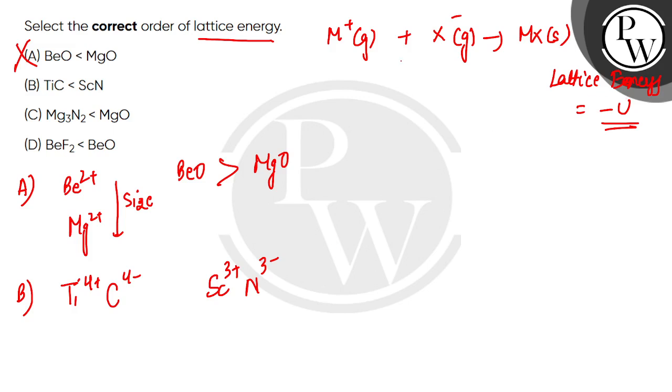The lattice energy depends on size and charge. Looking at the charges, titanium is 4+ and carbon is 4-, so there's more charge in TiC. This means TiC lattice is stronger than ScN. So option B is ruled out.